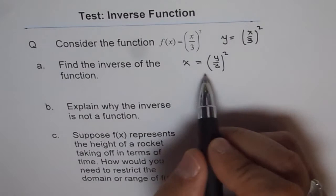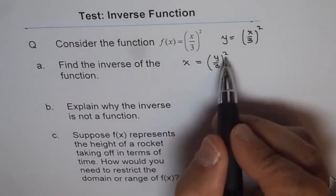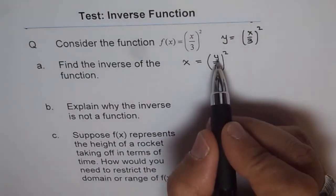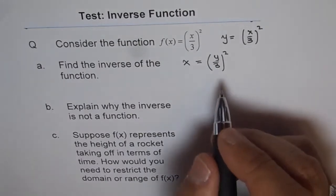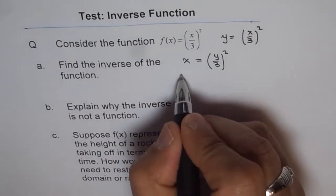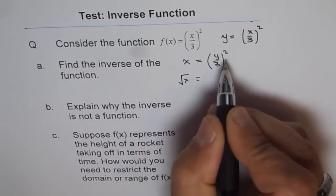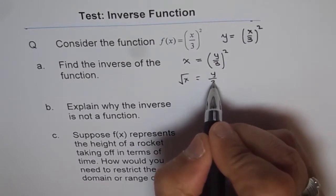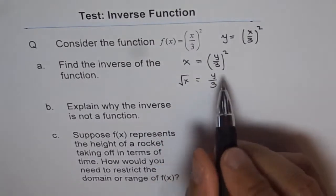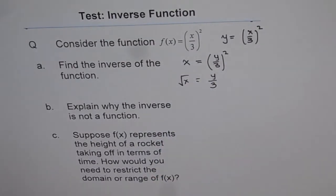We have x = (y/3)². Now we need to isolate y, so we need to square root both sides. When we do the square root of x, we get y/3 on the right side. And that is what students normally do — and that is a mistake. This is the major mistake committed by students, and that is why I have taken up this question.